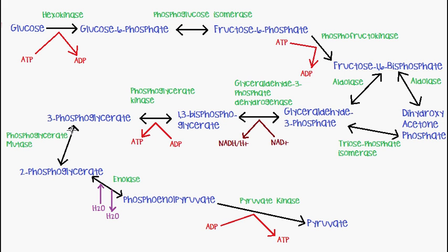3-phosphoglycerate is converted into 2-phosphoglycerate by the enzyme phosphoglycerate mutase — essentially a rearrangement reaction. Then the enzyme enolase converts 2-phosphoglycerate into phosphoenolpyruvate, releasing water (H₂O). Finally, phosphoenolpyruvate is converted into pyruvate by pyruvate kinase, with the phosphate group removed and added onto ADP to form ATP.